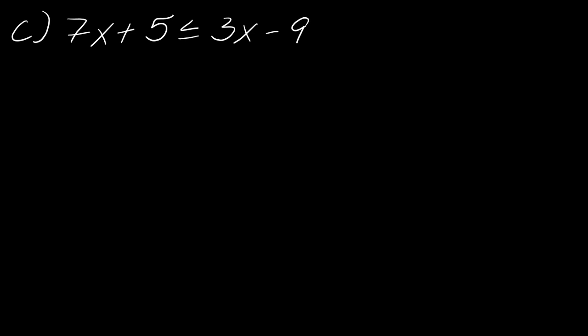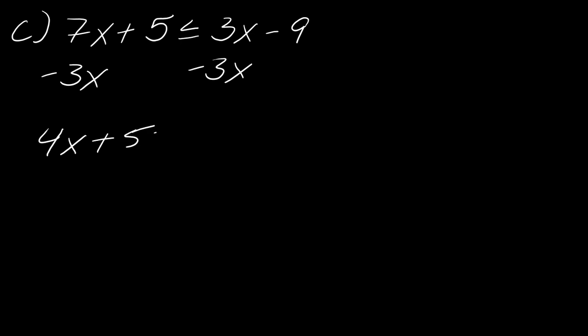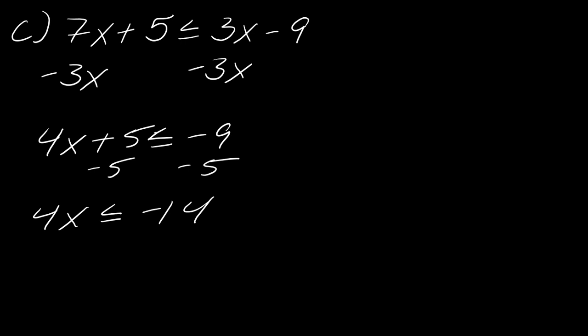Now with x's on both sides and numbers on both sides, I need to bring the x's to one side and numbers to the other, just like with equations. I subtract off the 5, giving 4x ≤ -14, then divide both sides by positive 4. Dividing -14 and 4 by 2 gives x ≤ -7/2.